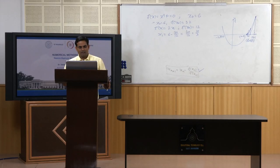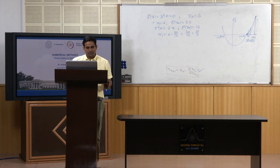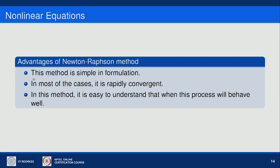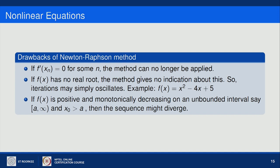We have several good things about the Newton-Raphson method. One is that this method is quite simple in formulation. In most cases it is rapidly convergent. Moreover, it is easy to understand when this process will behave well. However, we also have certain drawbacks. One of them — as I mentioned earlier — is that if f'(x_n) becomes 0 at any point, we cannot apply this method further.